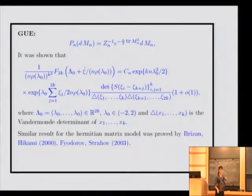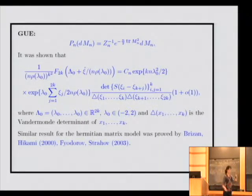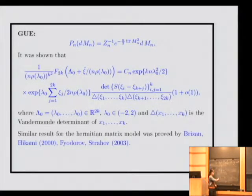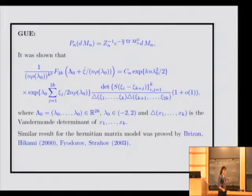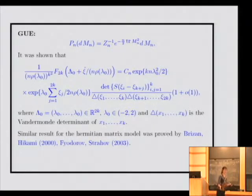Similarly, you have 2k of them — a product of 2k matrices. We have the pair indices: we take one index from the first set and one from the second set and form a k times k determinant. This estimate is for fixed k and n going to infinity. Yes, we fix k and take n to infinity only. If k tends to infinity, it is a different case.